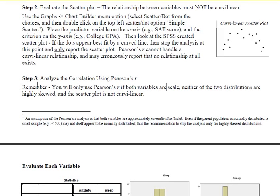Okay, so then we're on to step three. Remember, you will only use Pearson's R if both variables are scale, neither of the two distributions are highly skewed, and the scatterplot is not curvilinear.